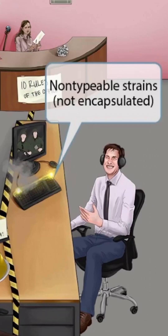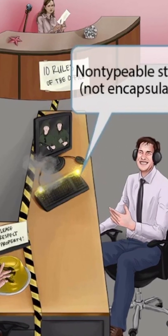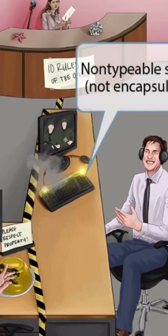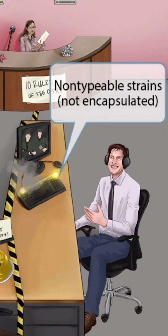Now that we've covered the typable strains of H. flu, let's discuss the non-typable strains. Everything to the right side of the tape will represent this. To make this extra memorable, we've shown James's keyboard totally fried with smoke rising above it. In other words, James can no longer type because his keyboard is broken — so you could say that the keyboard is non-typable. Dwayne got some form of retribution by destroying James's keyboard. The broken keyboard should help you remember that everything on the right side of the image is regarding the non-typable strains of H. flu.